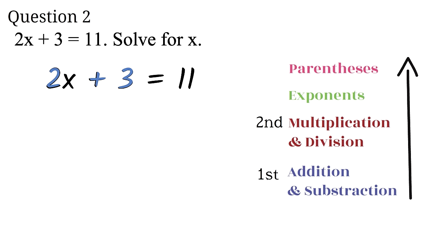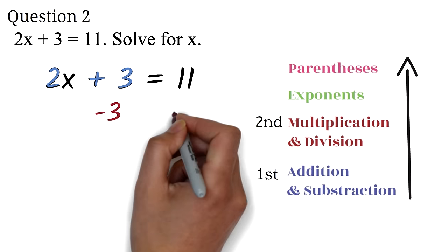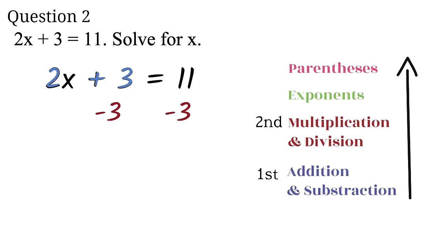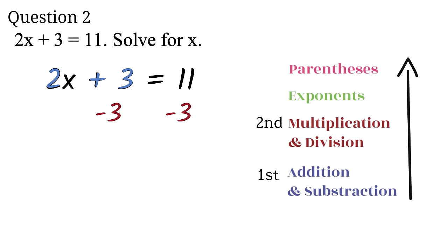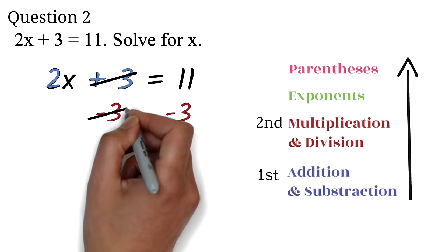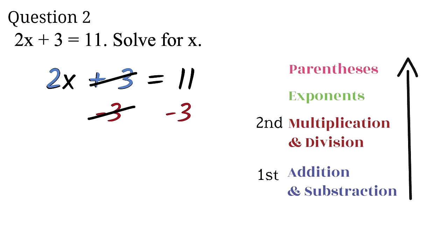So we will get rid of the plus 3 first. We get rid of the plus 3 by performing the opposite operation on it, so we will subtract 3 from both sides. The 3 will cancel out. 11 minus 3 is 8, so we have 2x equals 8.